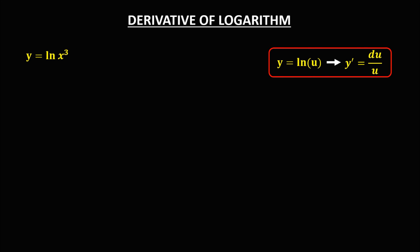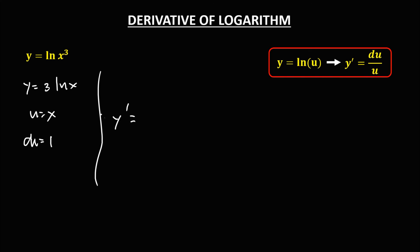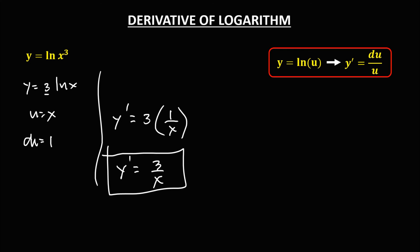For the final given, using the logarithm property, we rewrite: y equals 3 times ln x. Here u is x and du is 1, so y prime equals 3 times (1 over x). Therefore, y prime equals 3 over x. This is now the derivative.